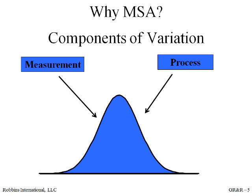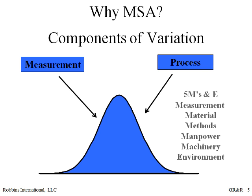There are six components of variation, often referred to as the 5Ms and E. By performing a measurement system analysis, or Gauge R&R, we will begin to uncover the sources of variation. The Gauge R&R will break down observed variation into two categories: the measurement system and the process. The most important takeaway is that how we collect and measure the data is critical. By analyzing the sources of variation, we will be able to identify the causes and work to reduce and eliminate them.